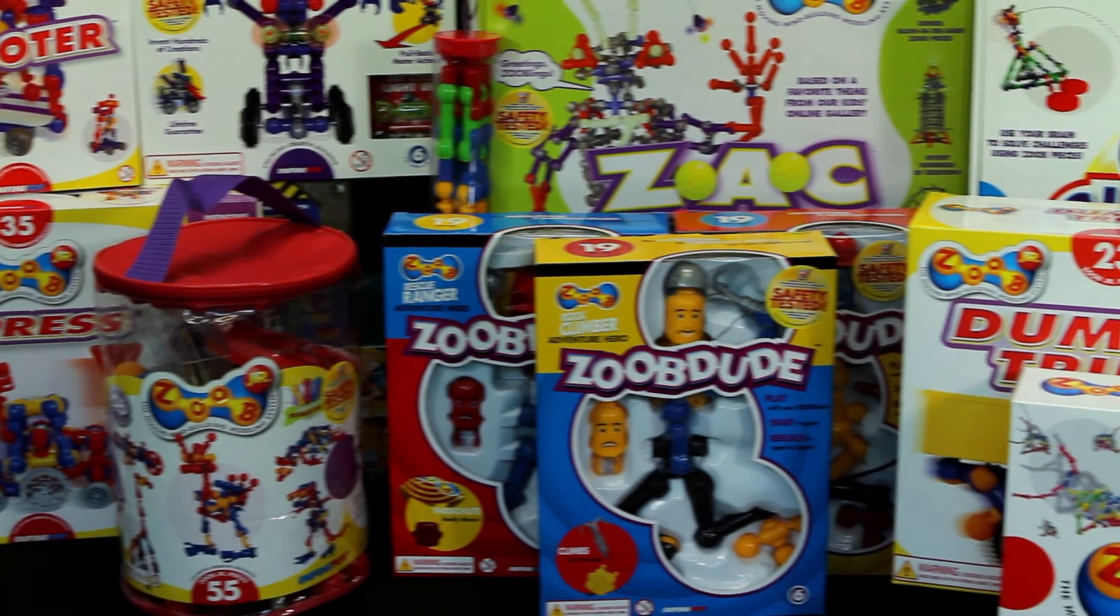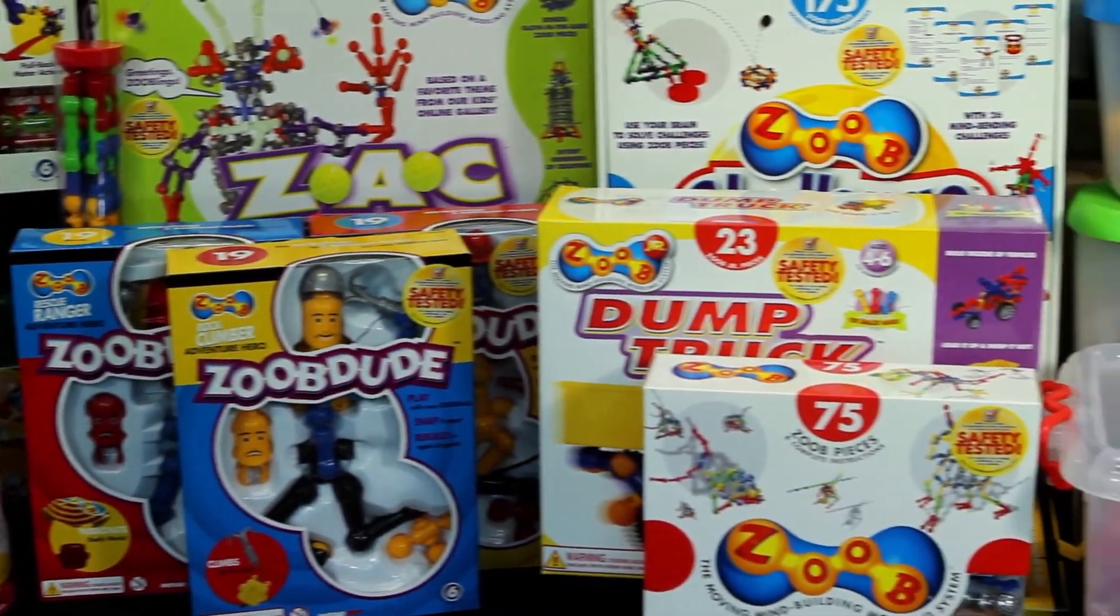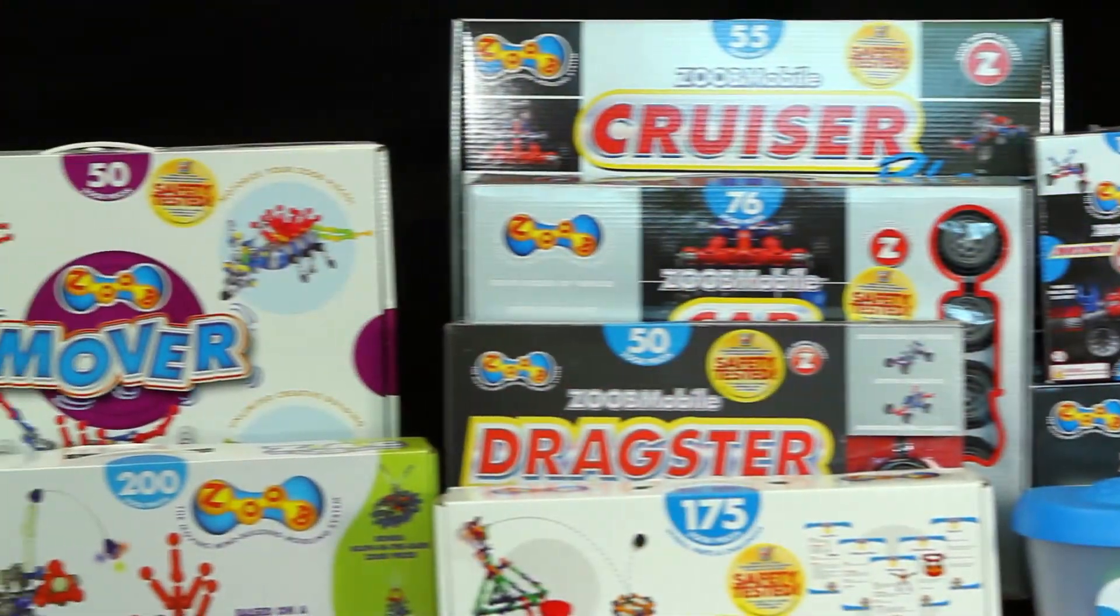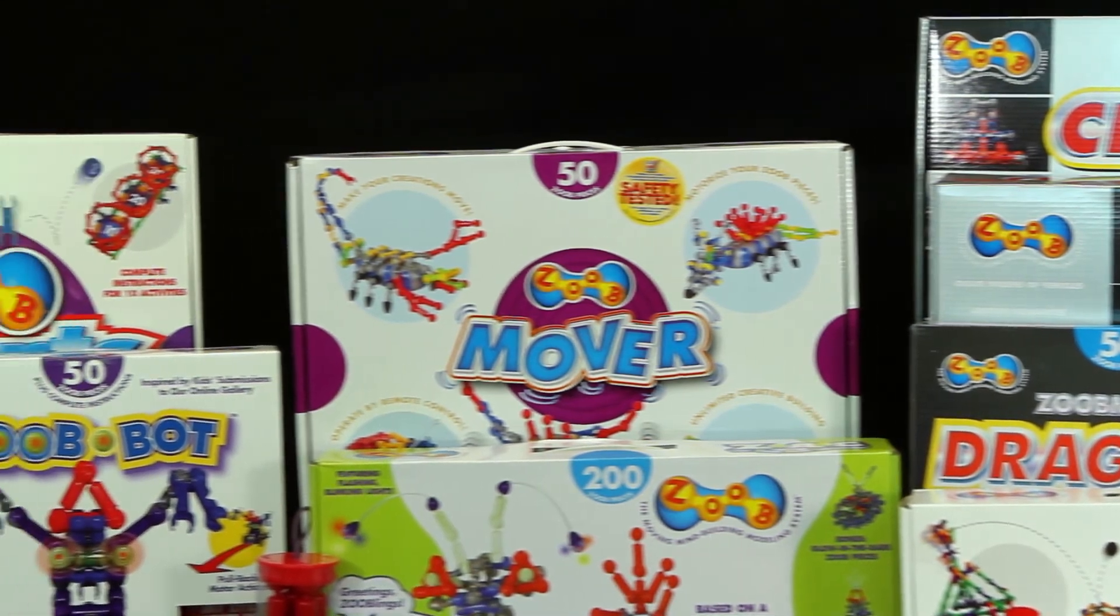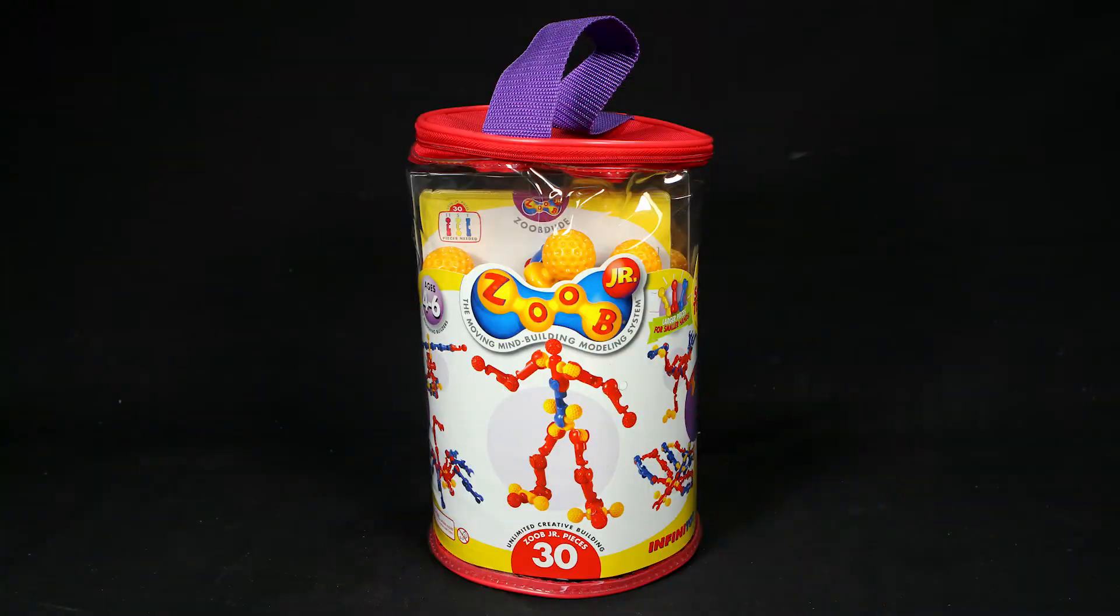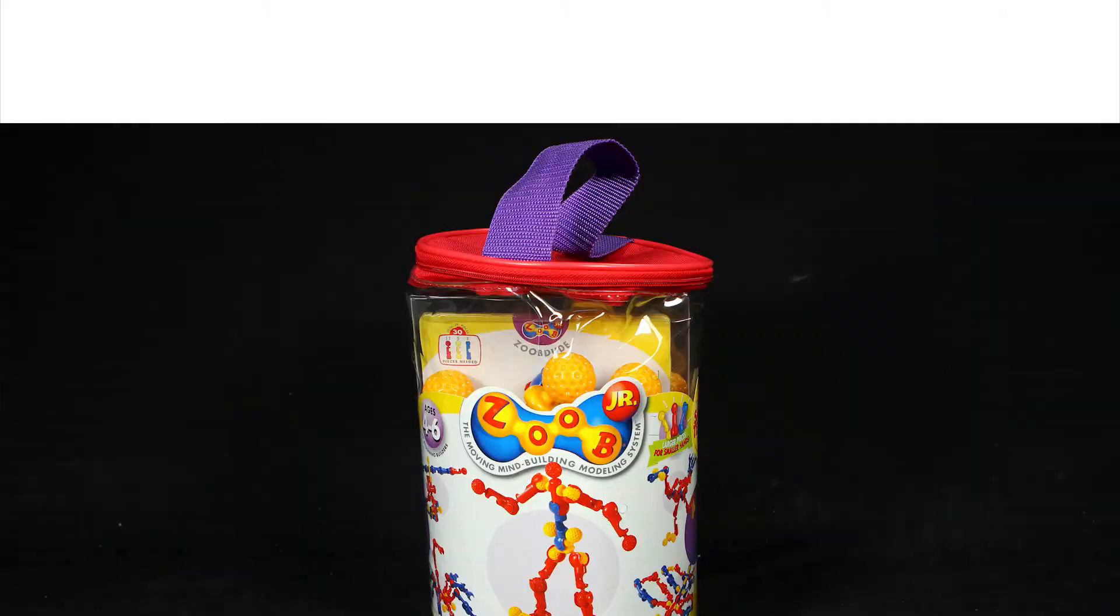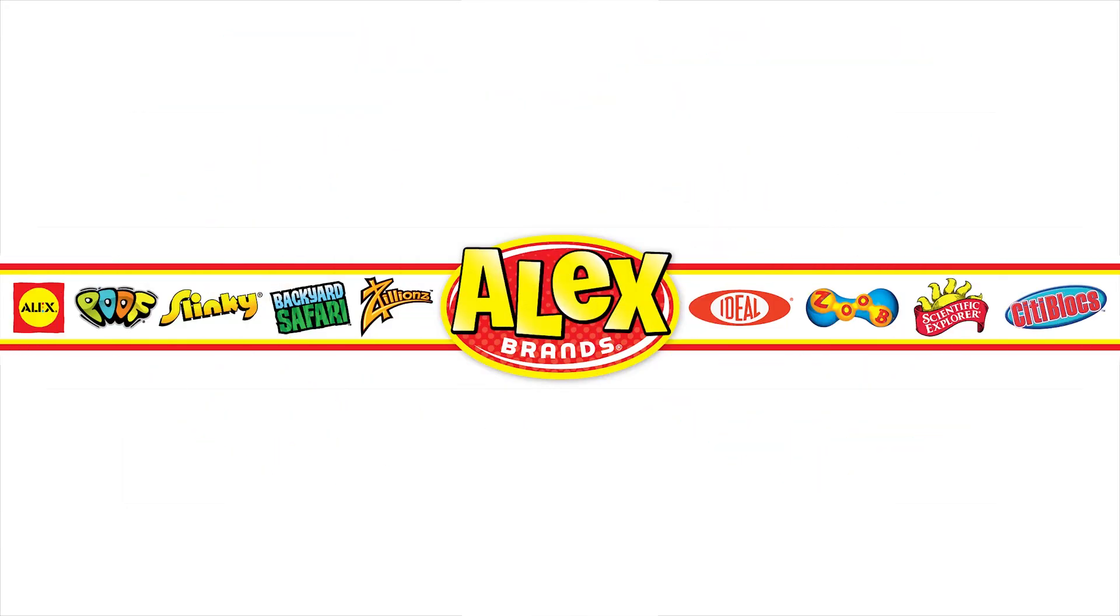Like ZOOB, ZOOB Junior's versatility means children can use this building set with other ZOOB Junior sets to create even more fantastic creations. The ZOOB Junior 30-piece set is recommended for ages 4 to 6. ZOOB is a member of the Alex Brands family.